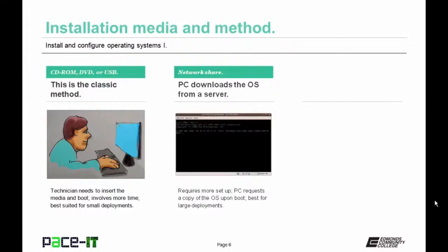For network deployment and network shares, the PC downloads the operating system from a server. This requires more setup as there is more hardware involved. The PC gets fired up and requests a copy of the operating system upon boot-up attempt. This is best for larger deployments.